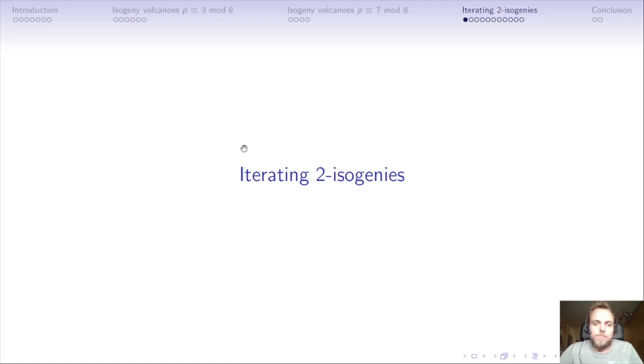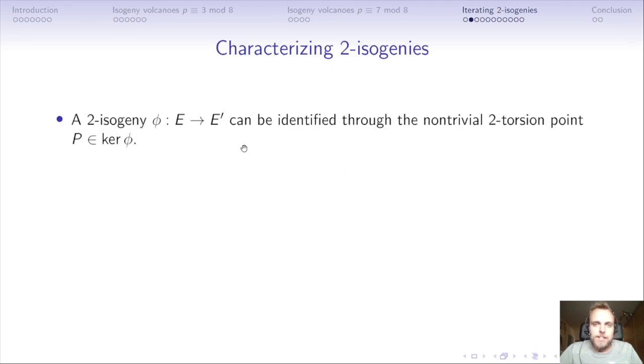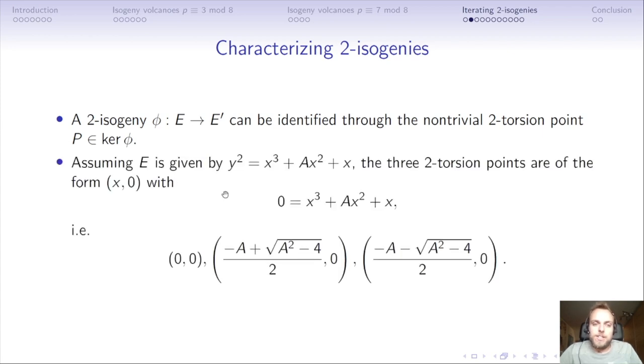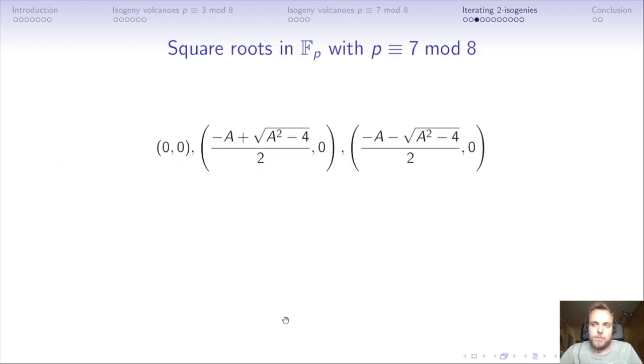However, 2-isogenies behave very differently in terms of computing them. A 2-isogeny can be identified through the non-trivial 2-torsion points in the kernel. A 2-isogeny is one-to-one with some 2-torsion points. A 2-torsion point is basically taking the equation of the elliptic curve, evaluating y at 0, and solving for x. We have a cubic equation; x = 0 is obviously a solution, and we're left to find the roots of some quadratic equation, which is high school mathematics. We end up with these 3 two-torsion points.